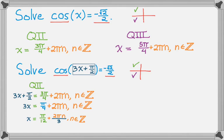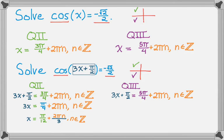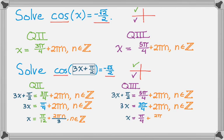Multiplication or division is applied to everything — it's an order of operations, combining like terms type of deal. For the quadrant 3 angle, 3x plus pi over 2 equals 5 pi over 4 plus 2 pi n. Subtracting pi over 2 gives 3x equals 3 pi over 4 plus 2 pi n. Dividing everything by 3, x equals pi over 4 plus 2 pi n over 3, where n is an element of the integers.